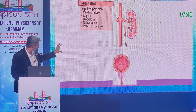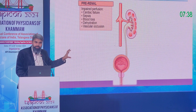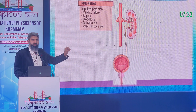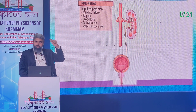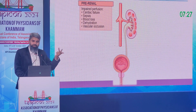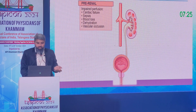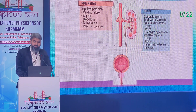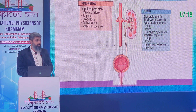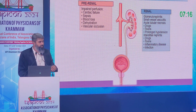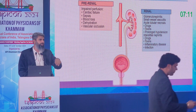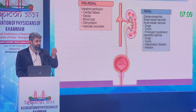When facing AKI, always approach using the pre-renal, renal, post-renal classification — a framework standing for 100 years from Davidson. Pre-renal means insufficient blood supply to the kidney, caused by congestive cardiac failure, sepsis, hypovolemia, or dehydration. Intrinsic renal causes include acute glomerulonephritis and interstitial nephritis; drugs are the most common cause of interstitial kidney disease.